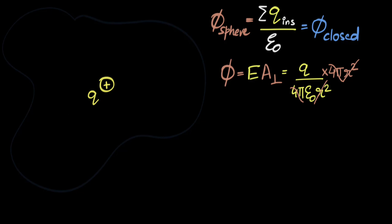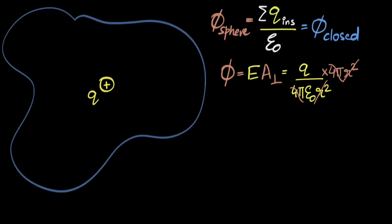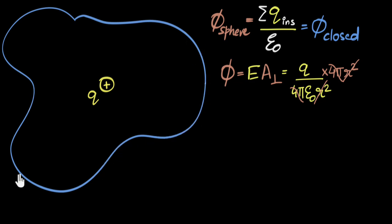How do we prove this for any random shape? Now the electric field everywhere will be different, and the area is all crooked, so it's going to be a nightmare to calculate. There are probably multiple ways to prove it, but one I love is what I found in Richard Feynman's book.